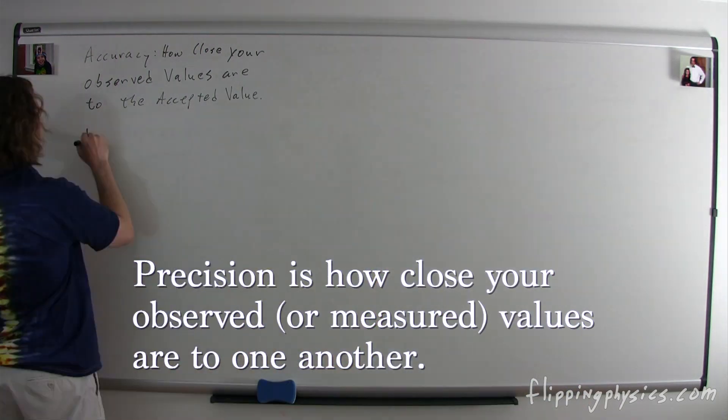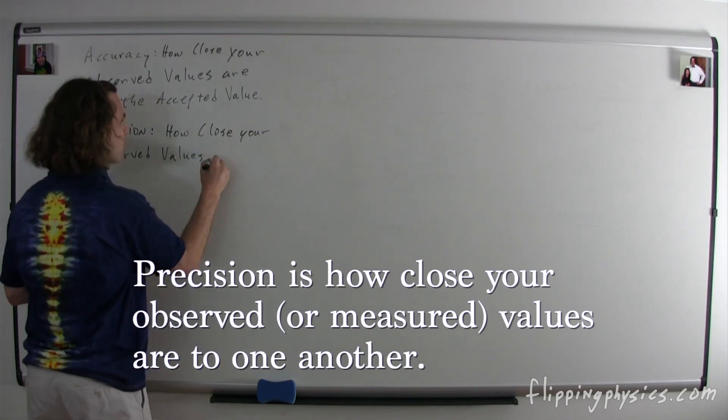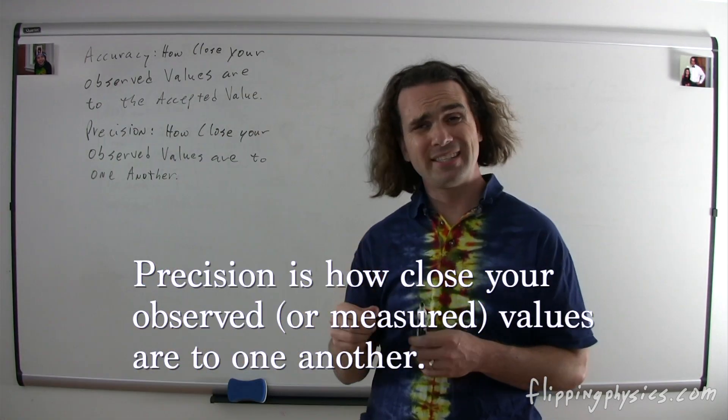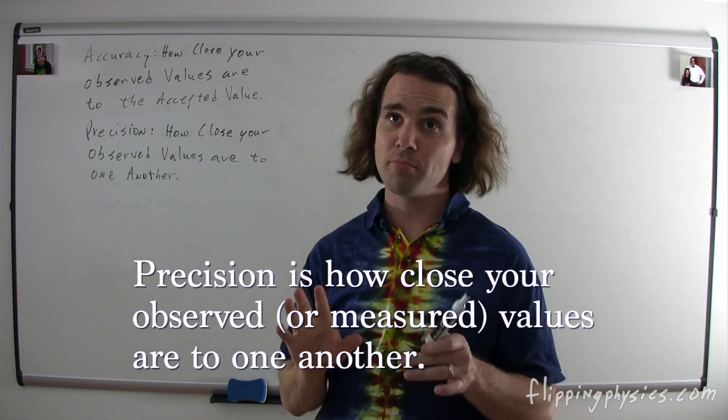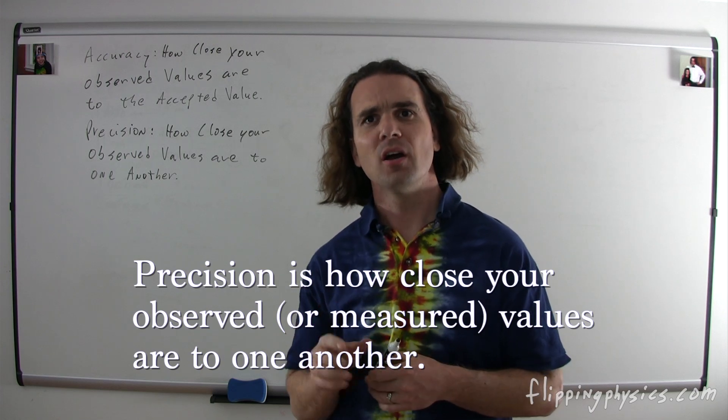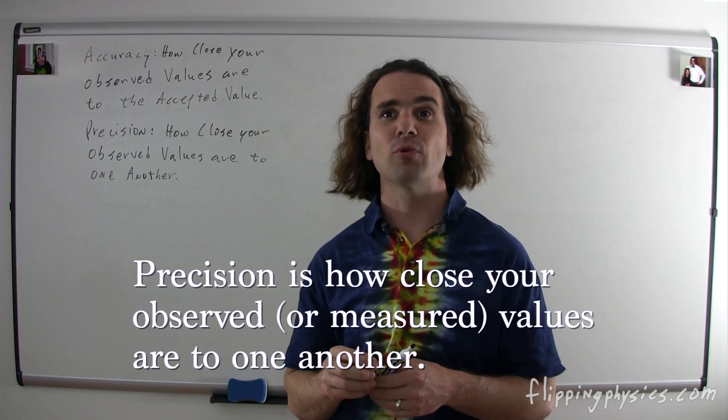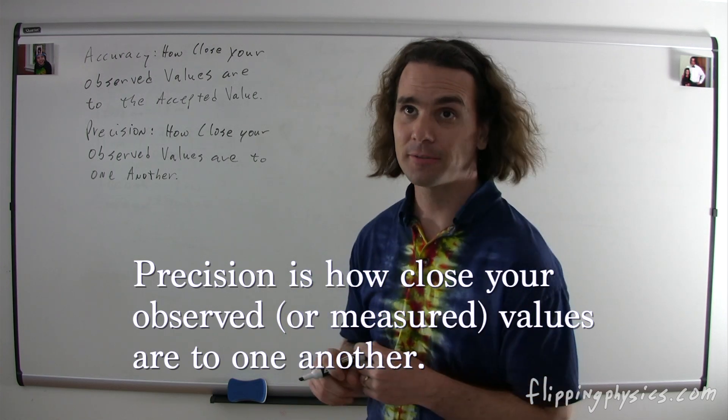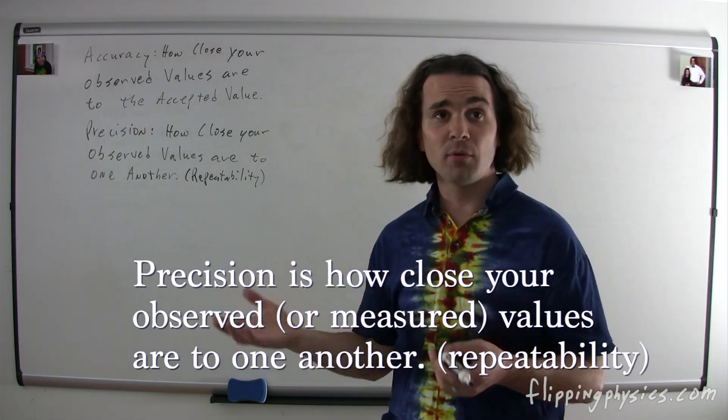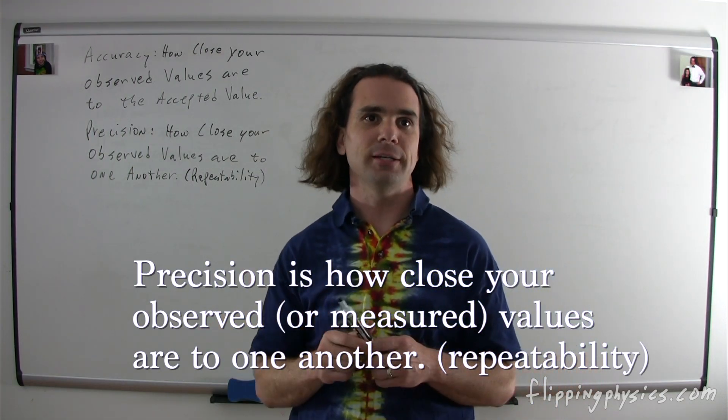For example, the accepted value for the acceleration due to gravity here on planet Earth is 9.81 meters per second squared. This isn't an actual value or a correct value because it isn't actually the same at every location on the planet.